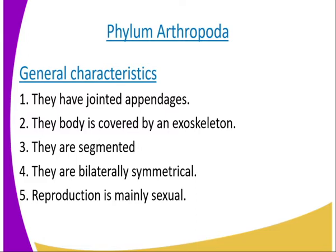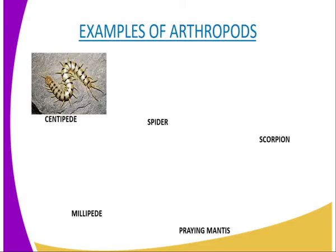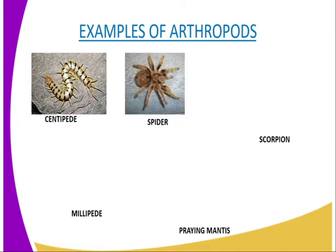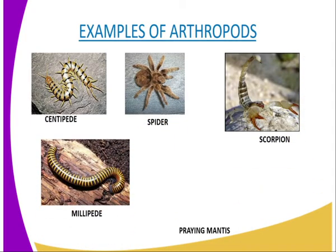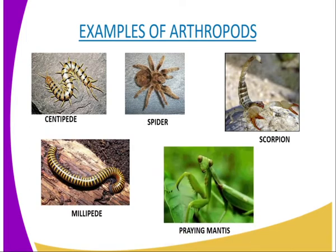We are going to look at phylum arthropoda. We have got general characteristics of each member, whereby one, members of phylum arthropoda have jointed appendages, hence the name arthropoda. Examples of arthropods include the centipede, the spider, the scorpion, the millipede, and we also have the praying mantis. As I go through the general characteristics, we are going to observe them from the diagrams on our screens.